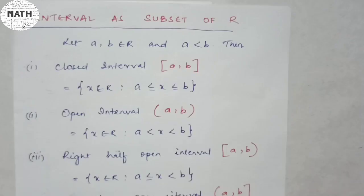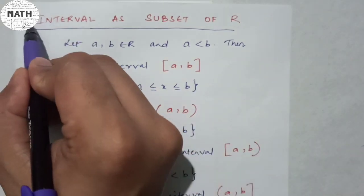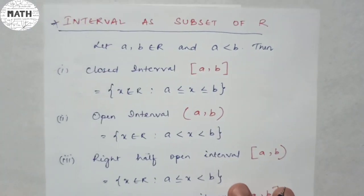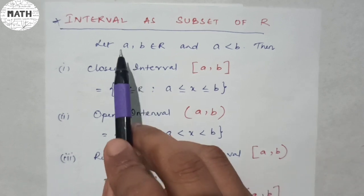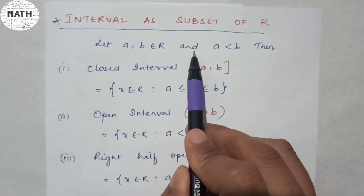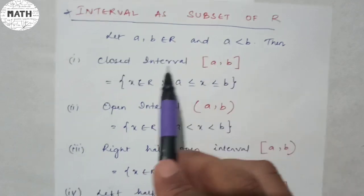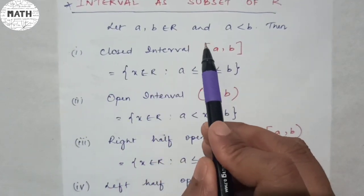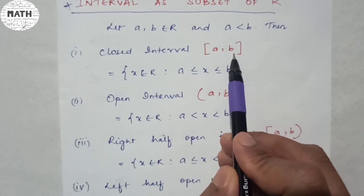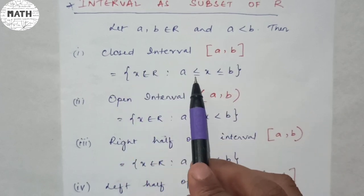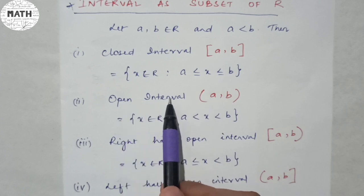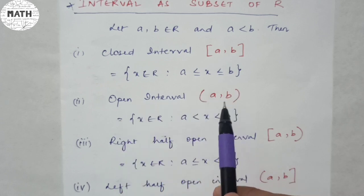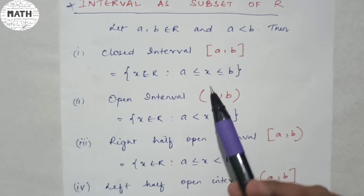The next topic is about your interval as a subset of R. This is a very important topic. Let A and B belong to R and A less than B. Then the closed interval is defined by square brackets — in a closed interval, there is an equal-to sign. Whereas an open interval is defined by round brackets — in an open interval, there is no equal-to sign. That's the difference.